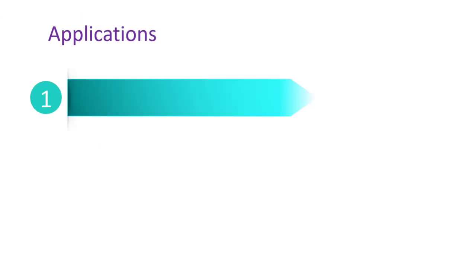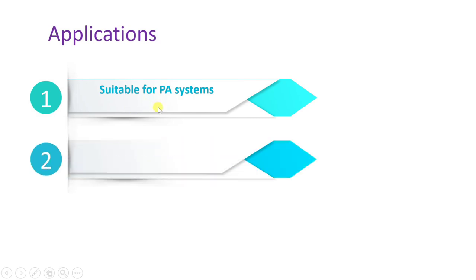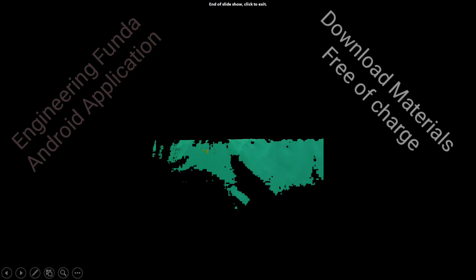Applications of the moving coil loudspeaker include use in PA (public address) systems for less mass applications, and in broadcast system studios as well.